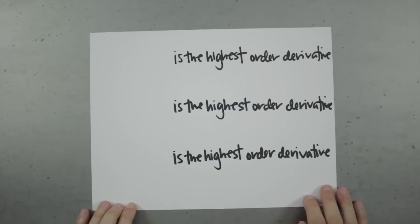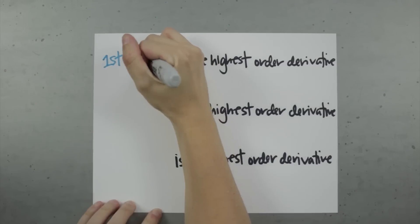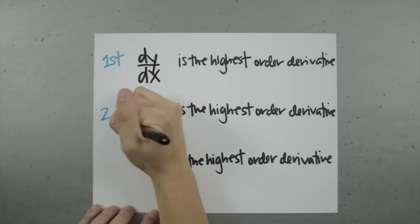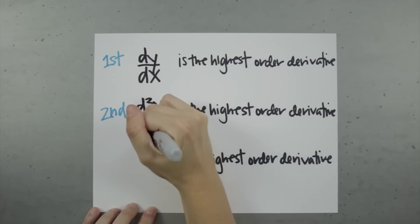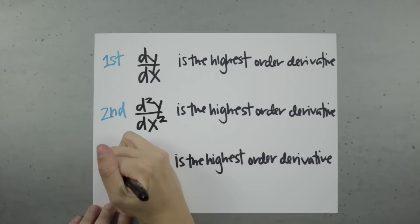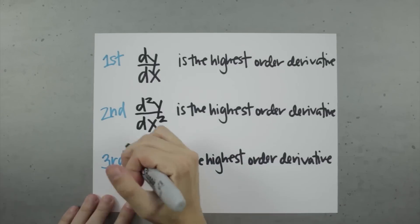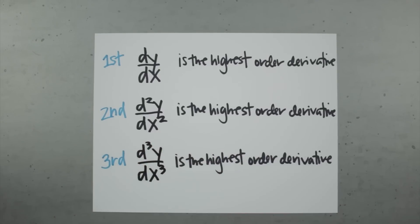Ordinary differential equations are generally classified by their order. A first order ordinary differential equation has a first order derivative in it, like dy over dx, but no higher order derivatives. A second order ordinary differential equation has a second order derivative in it, like d squared y over dx squared, but no higher order derivatives. In other words, you know the order of the differential equation based on the highest order derivative it contains.